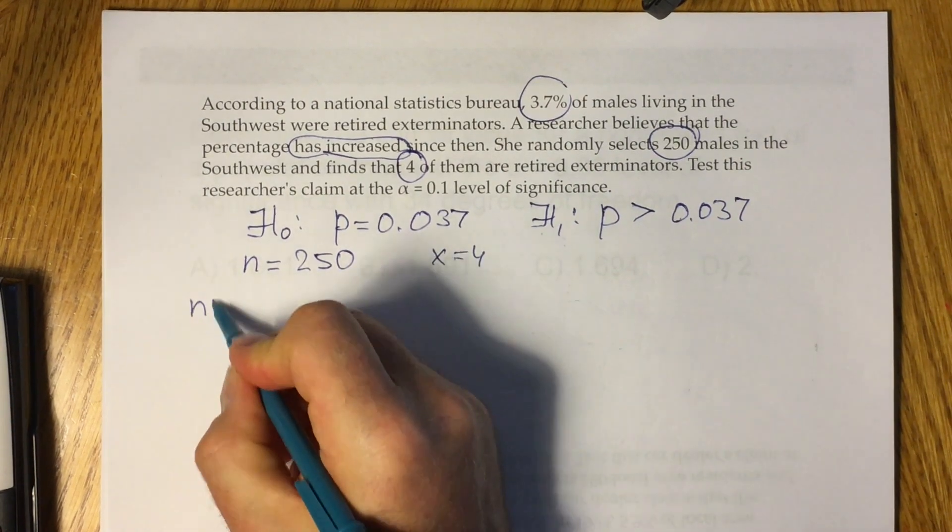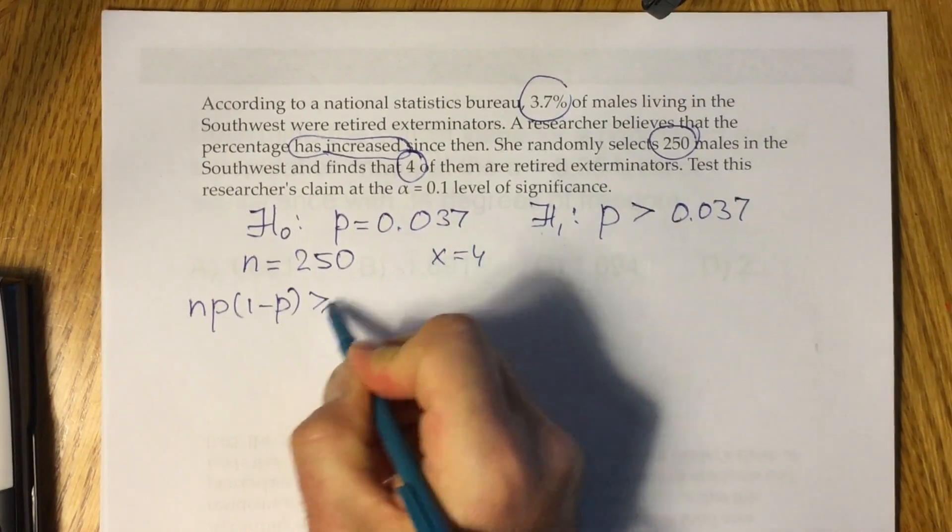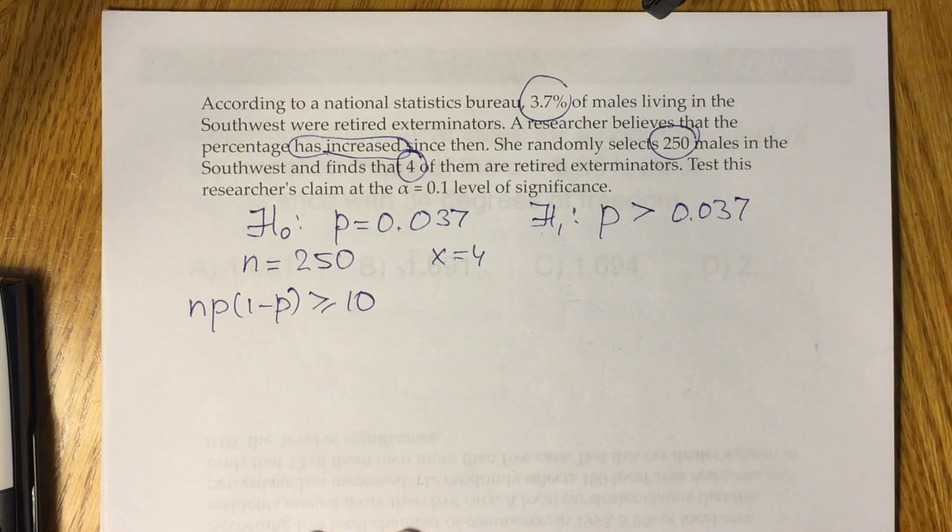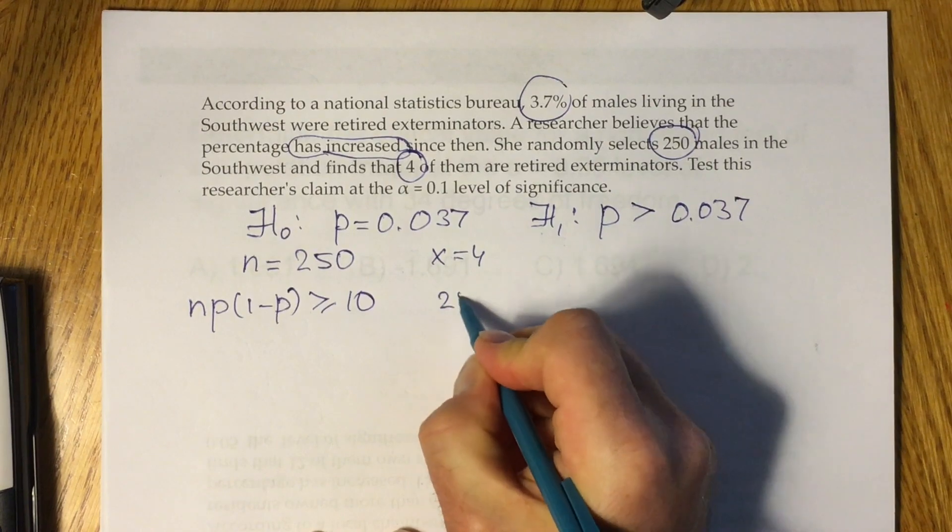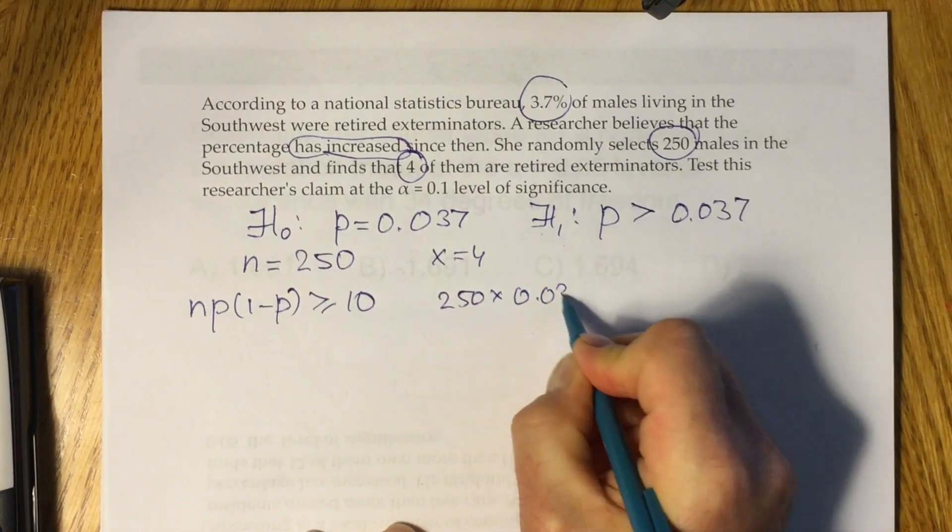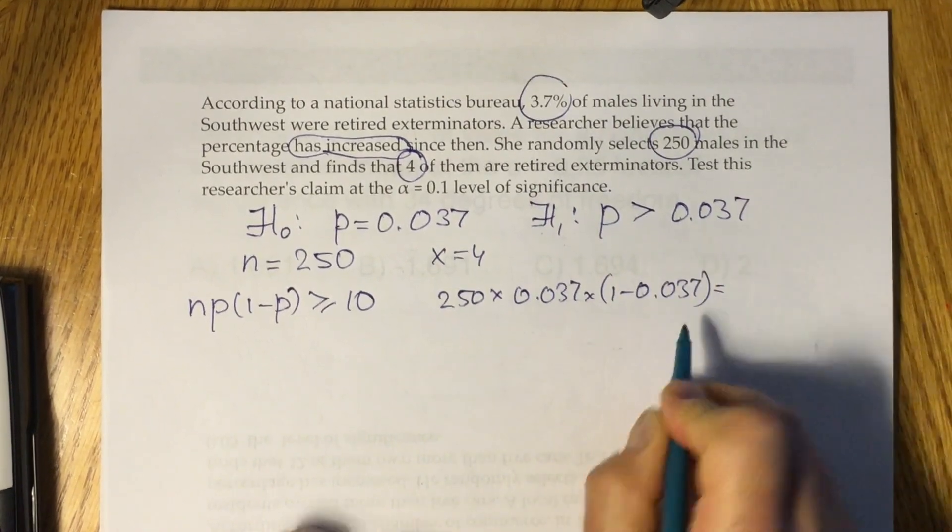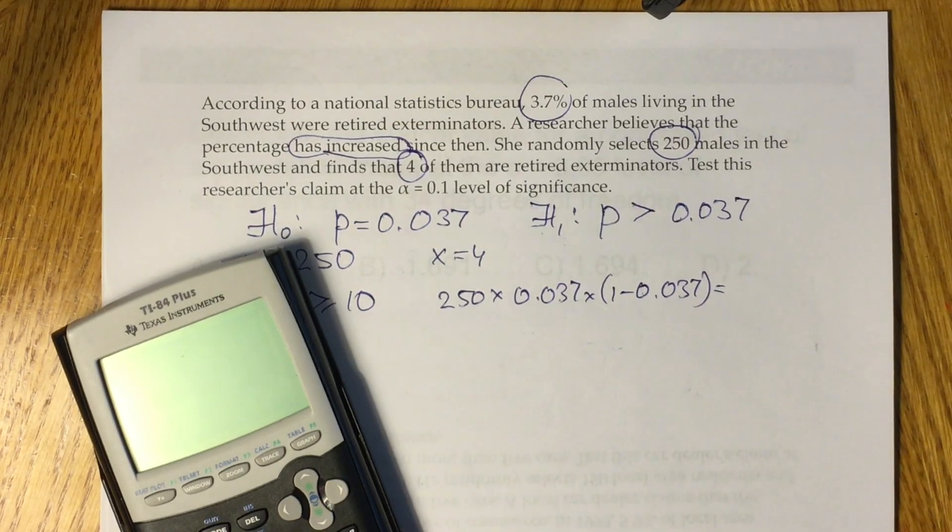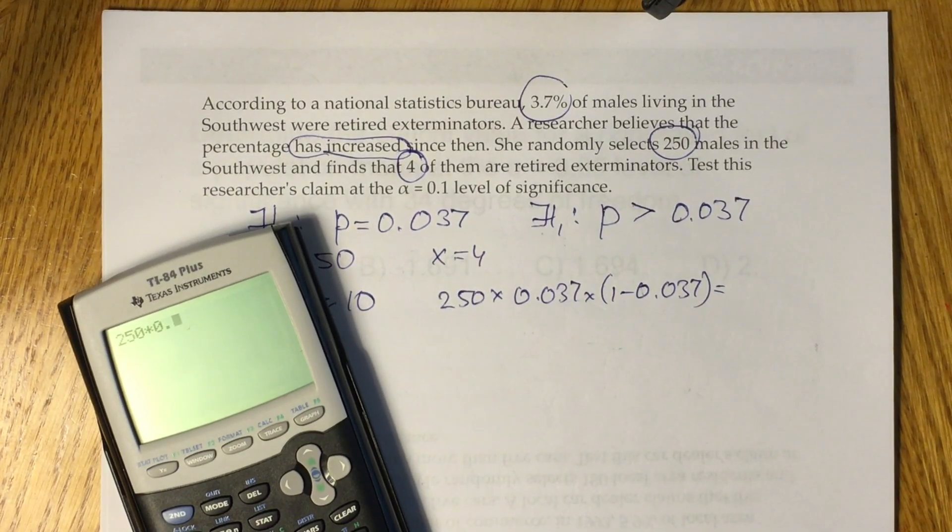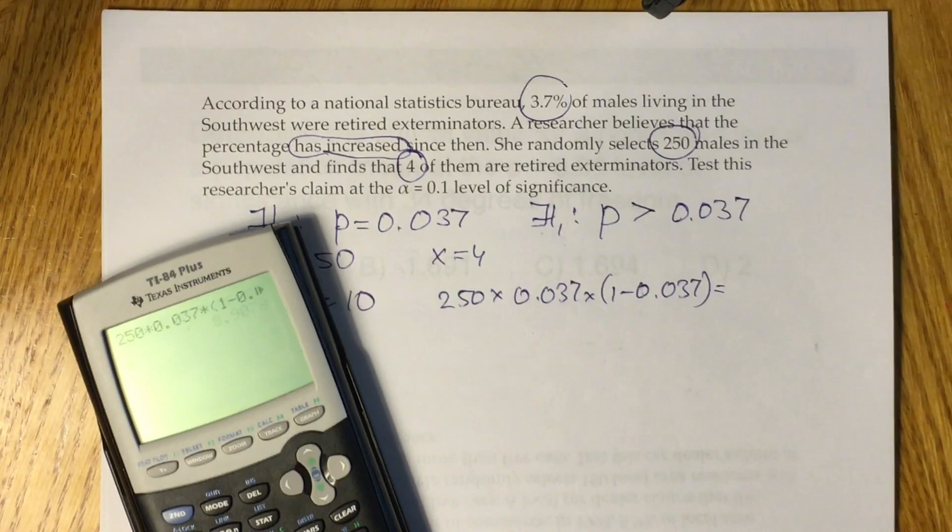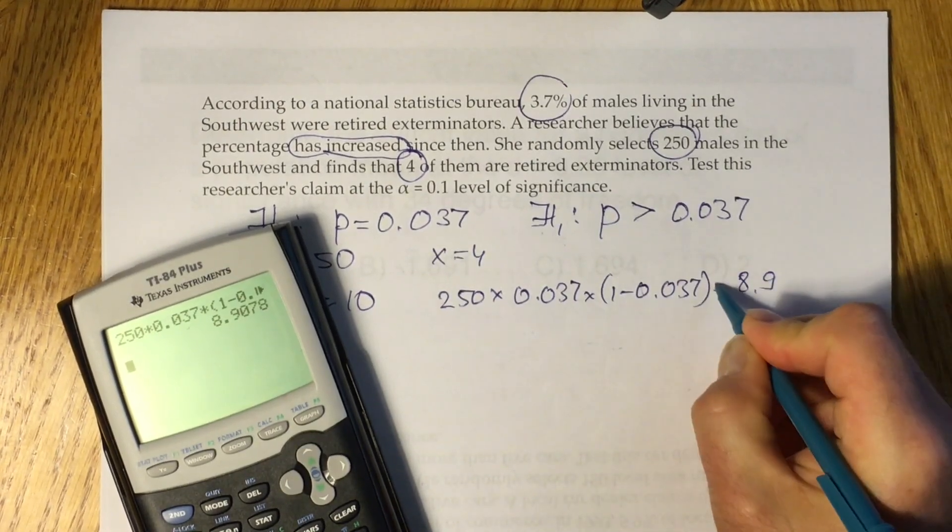Then we have to look at the condition: np(1-p) has to be greater or equal than 10 to be able to use one prop z test function. So let's put in this condition our numbers. We will have 250 times 0.037 times (1 minus 0.037), and you have to use calculator to find this number. 250 times 0.037 times (1 minus 0.037), click enter and you will have approximately 8.9.